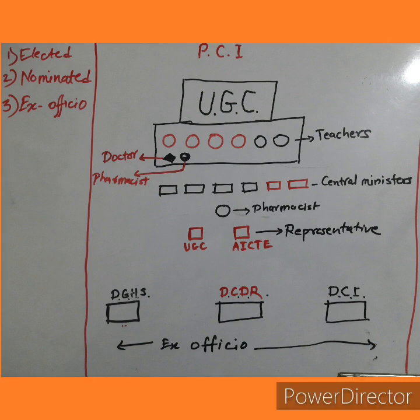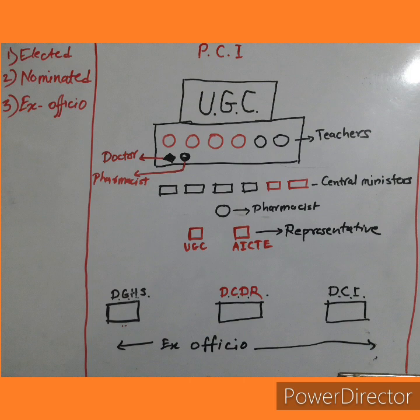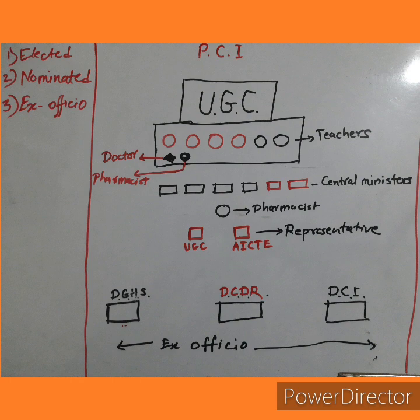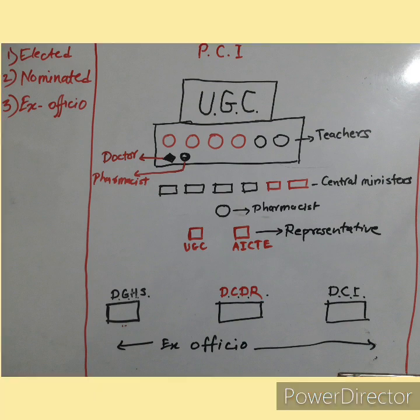The third and last category is the ex-officio members. Imagine three backbenchers: one sitting in the extreme left corner, one exactly in the middle, and one in the extreme right corner. The extreme left person is eating healthy food — correlate this with the Director General of Health Services. The middle person is holding a burette and pipette — correlate this with the Director of the Central Drug Laboratory. The extreme right person is holding a remote control — correlate this with the Drug Controller of India.